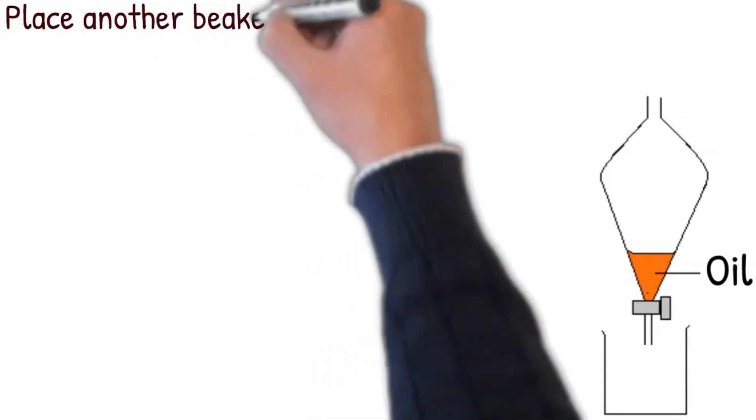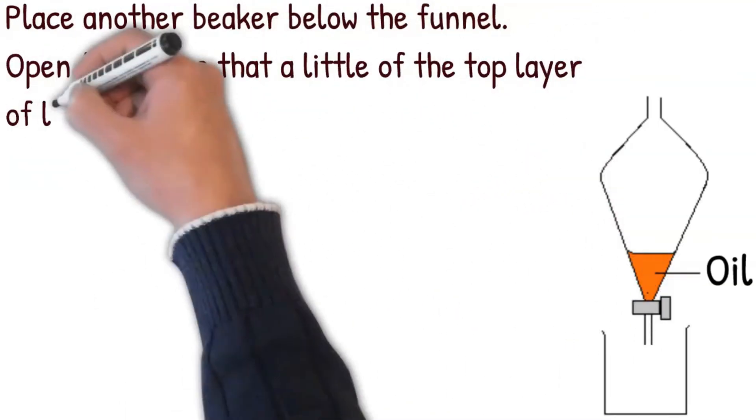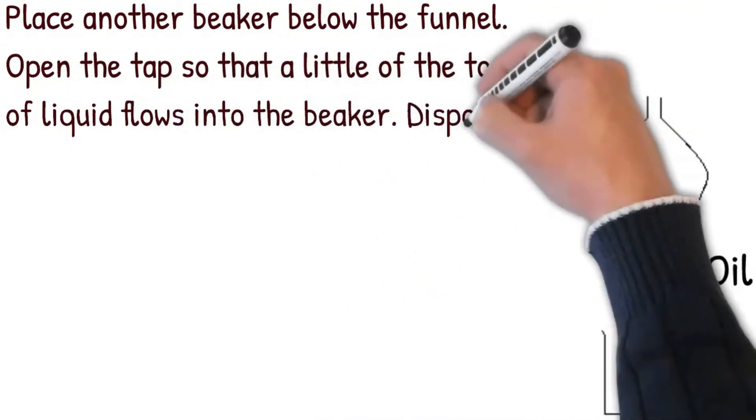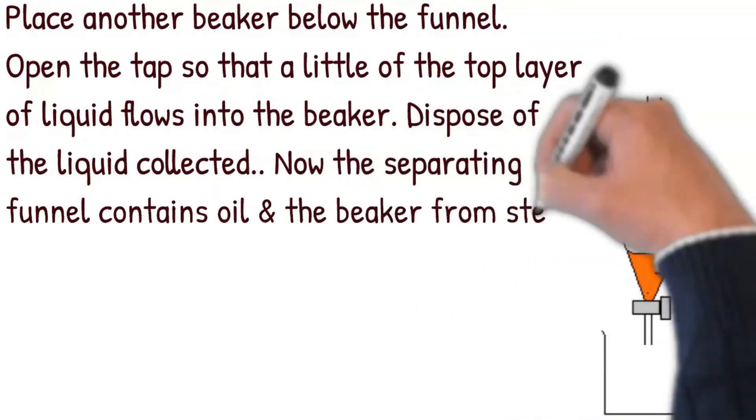Place another beaker below the funnel. Open the tap so that a little of the top layer of liquid flows into the beaker. Dispose of the liquid collected. Now the separating funnel contains oil and the beaker from step two contains only water.